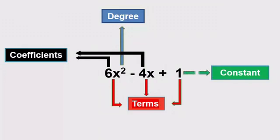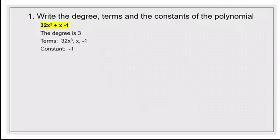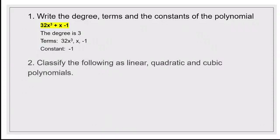The constant here is 1, as it stands alone without any variable. Now let's go through some exercises. The first question is: write the degree, terms, and the constant of the polynomial 32x³ plus x minus 1. As you can see, 3 is the highest power, so 3 is the degree. The terms are 32x³, x, and minus 1, and minus 1 is the constant.